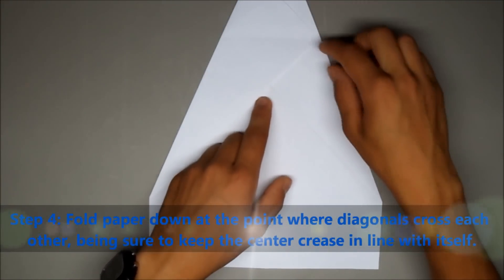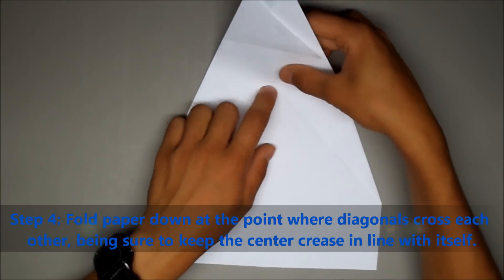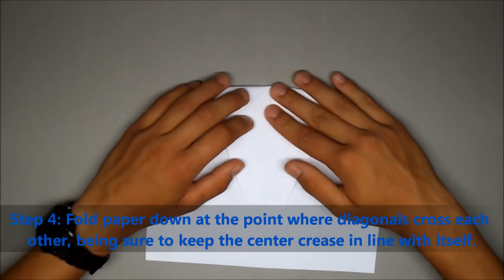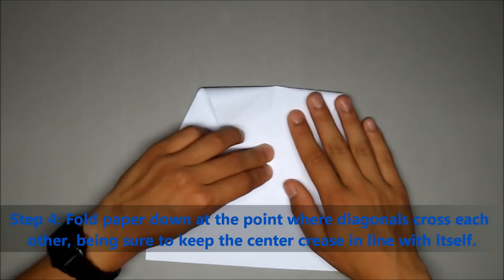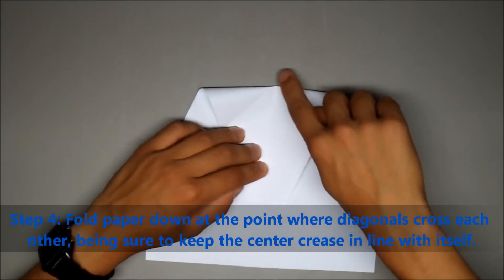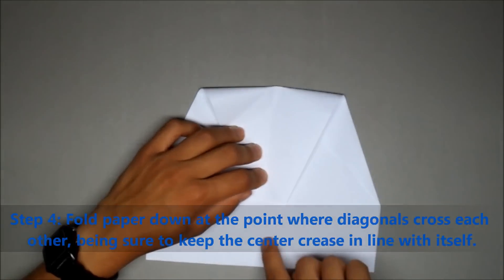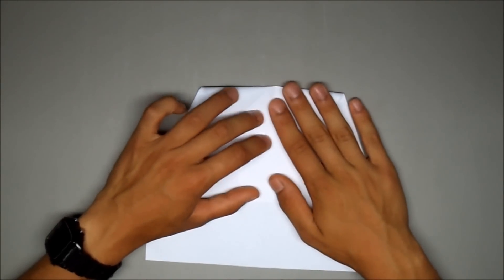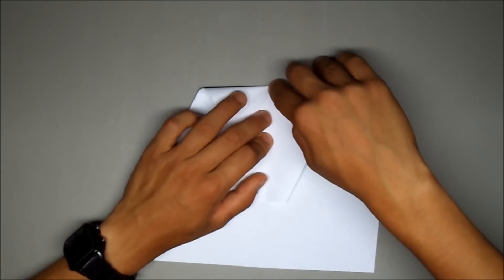So then you take this point right here where the lines cross, and you fold it over. And at this point this is really important. See, the center crease right here has to line up. So make sure that it's all one solid line and just press the center.